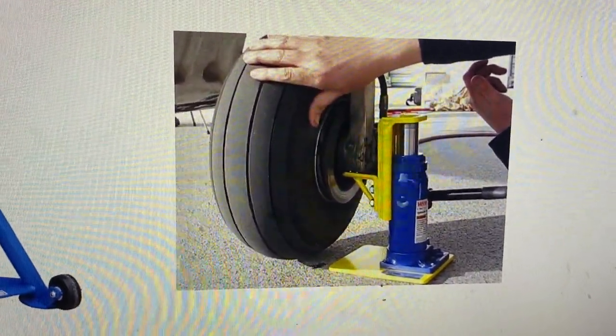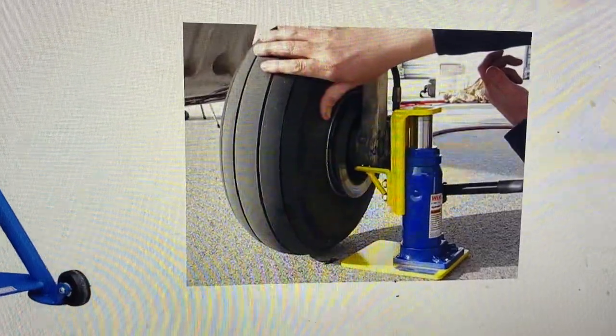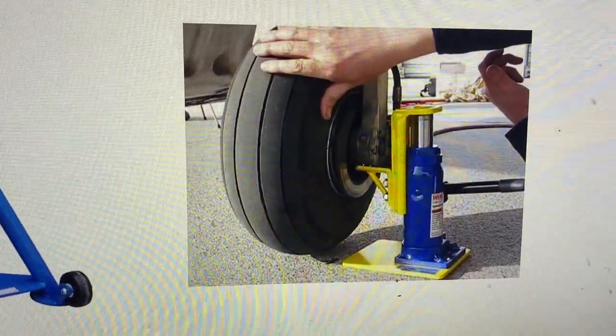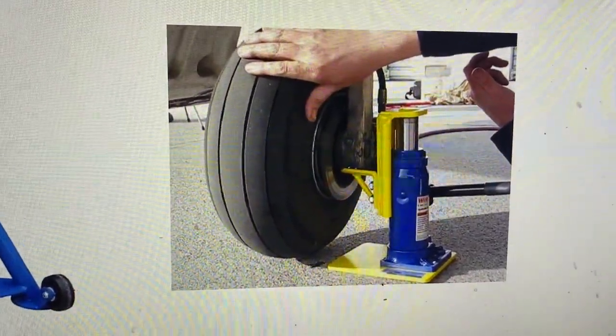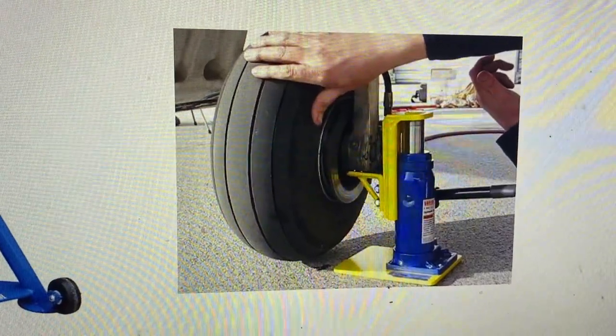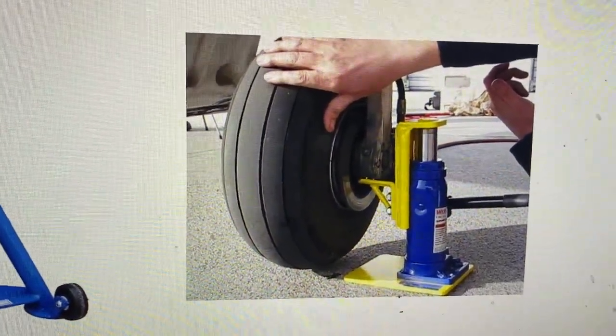Whenever you have one wheel or one tire that went flat or a brake that needs to be changed, you're probably not going to jack the whole aircraft. You're just going to jack one wheel at a time. This is the type of jack that's used for that.